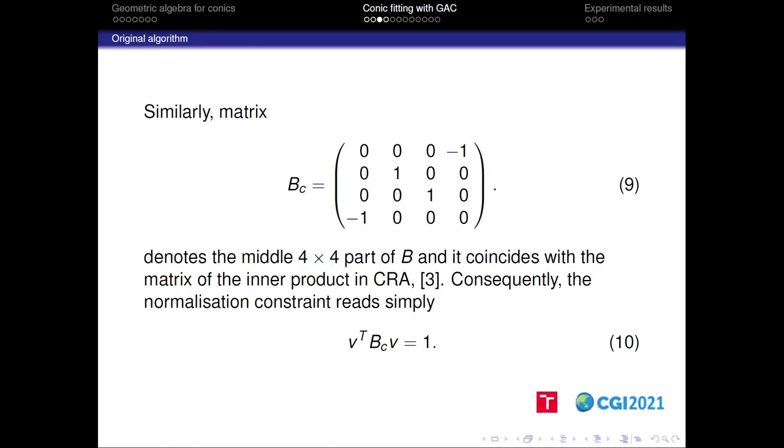In order to reach the solution of our optimization problem, the authors assume this decomposition of the matrix P where P0 is a 2×2 matrix, P1 is a 2×4 matrix and in the middle we have a matrix Pc that is 4×4. Here we have to stress that the subscript c denotes that this block corresponds to the CRA part in GAC.